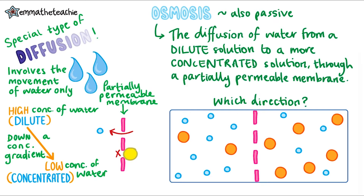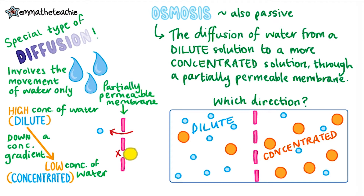To answer this question, we need to identify which side is more dilute and which is more concentrated. The dilute side is the one with the higher concentration of water molecules, which in this case is the left side of the membrane. The right side has fewer water molecules and more sucrose molecules, making it the concentrated side. So, osmosis occurs from a dilute solution to a more concentrated solution, meaning the net movement of water is from the left side over to the right side.